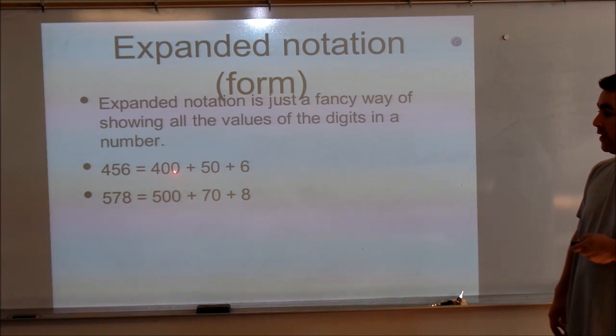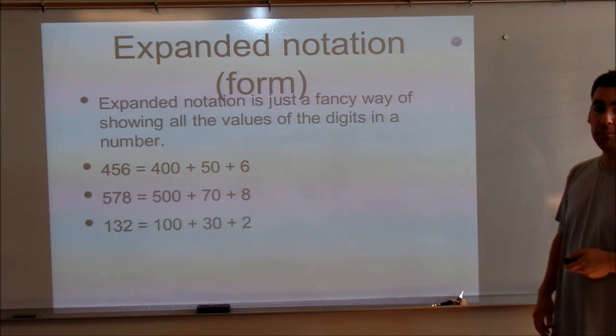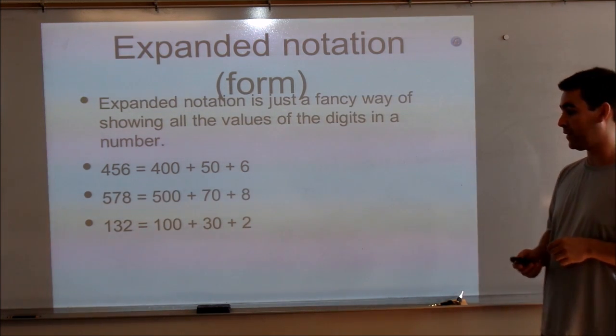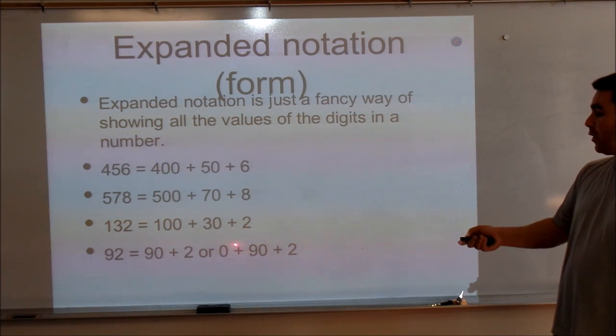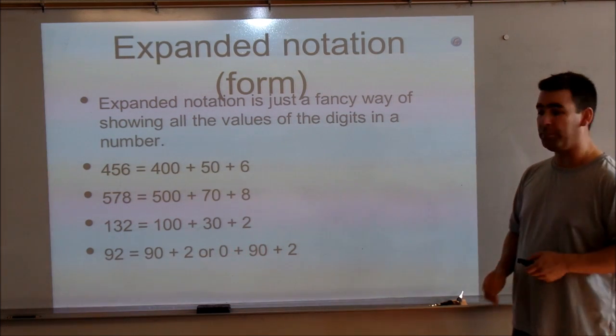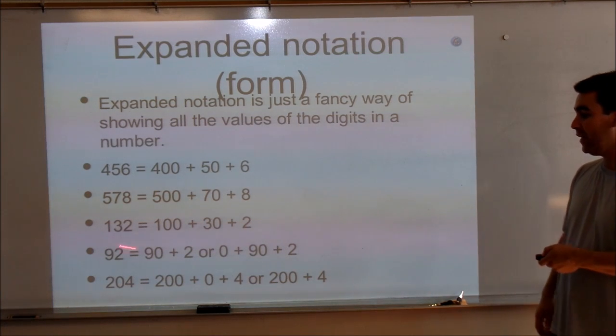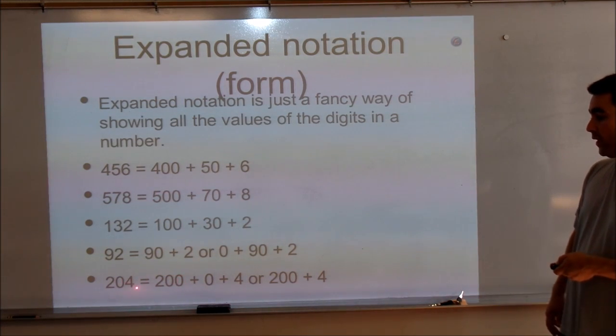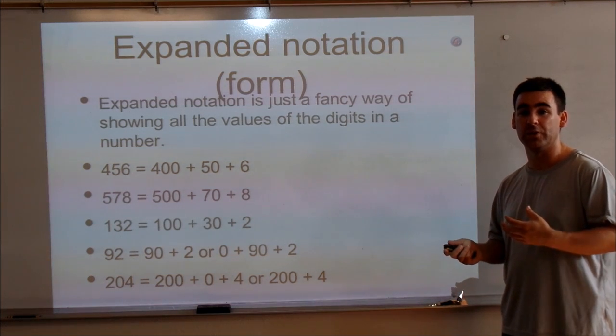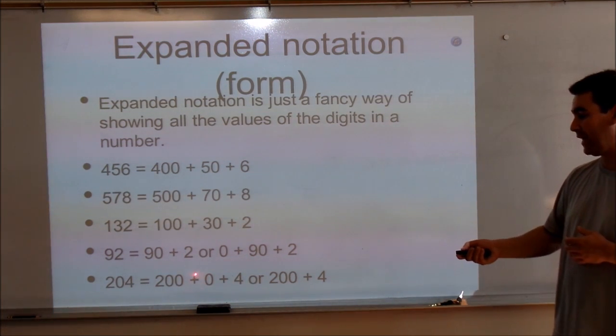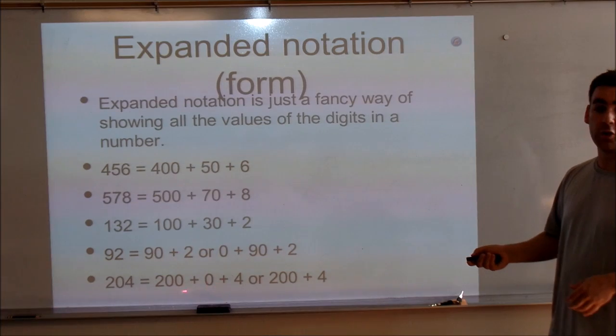578 becomes 500 plus 70 plus 8. 132 becomes 100 plus 30 plus 2. 92 becomes 90 plus 2, or some students may write 0 plus 90 plus 2 because there's no number in the hundreds place. And lastly, 204 becomes 200 plus 0 plus 4 or 200 plus 4. Some students, it really helps them to put that 0 in there as a placeholder.